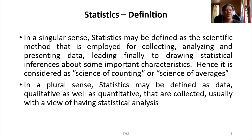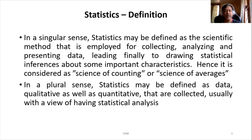As far as the definition is concerned, it can be defined in two different ways: one is called the singular sense and another is the plural sense. In singular sense, it is all about the scientific method employed for collecting, analyzing, and presenting the data, finally leading to some statistical inferences about specific characteristics like average, standard deviation, or anything else — basically considered as the science of counting or science of averages. Whereas in plural sense, statistics may be defined as data — qualitative as well as quantitative — collected usually with a view to having statistical analysis.